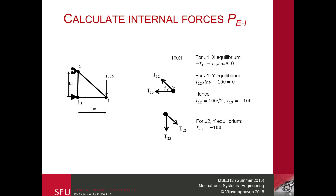The first step is to calculate all the internal forces, which can be done using method of sections or method of joints. We do it quickly using the method of joints. Taking equilibrium about point 1, assuming forces to the right and upward are positive, we write the x and y equilibrium equations. With two unknowns, we solve these two equations and find T12 is 100 times root 2 Newtons, and T13 is a compressive force of 100 Newtons.